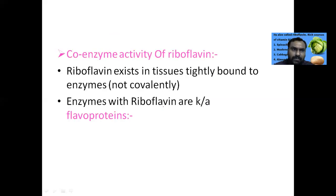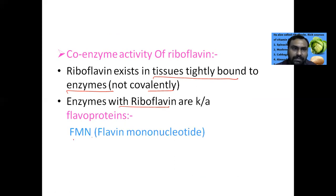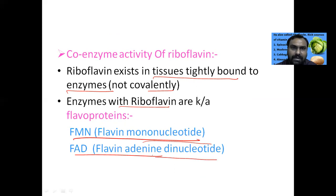Riboflavin will exist in tissue tightly bound to enzymes, not covalently bound. Enzymes with riboflavin are called flavoproteins. They are FMN and FAD, flavin mononucleotide and flavin adenine dinucleotide. You have to remember, whenever you see FMN or FAD, it is a coenzyme which is vitamin B2, riboflavin.